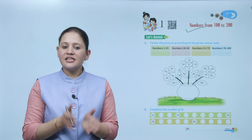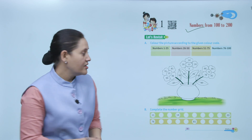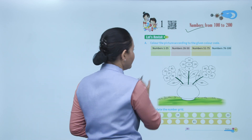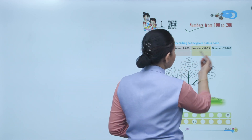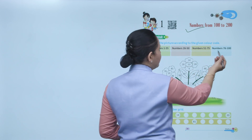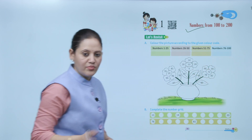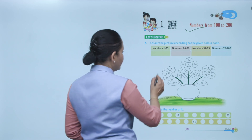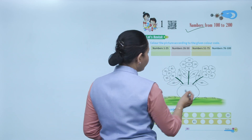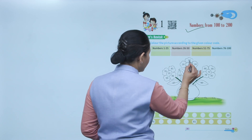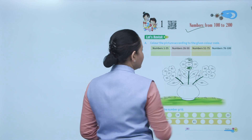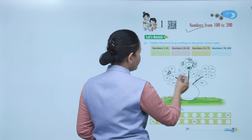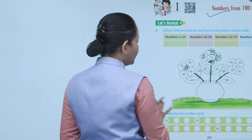Let's revisit: color the picture according to the given color code. From number 1 to 25, color green. Number 26 to 50, color pink. Number 51 to 75, color orange. Number 76 to 100, color blue. For example, numbers 1 to 25 — find where they are, like number 9, number 14, 24, 19, 20 — color them green.